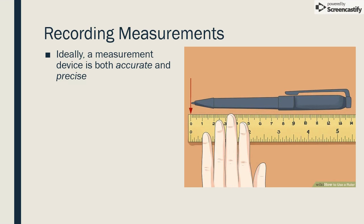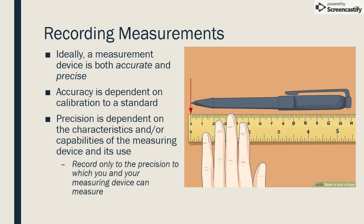Precision is dependent on the characteristics or capabilities of the measuring device and its use. Precision was a problem in ancient times when the first measuring systems were invented. It was common to measure things using units that were based on the human body. An inch was considered to be the width of a man's thumb, so depending on which man was doing the measuring, the length of an object would be reported very differently each time it was measured. To avoid miscommunication, you should only report measurements to the precision that your tool is capable of.